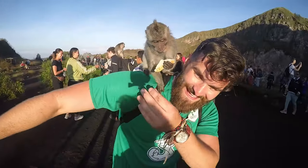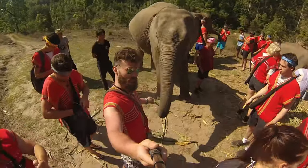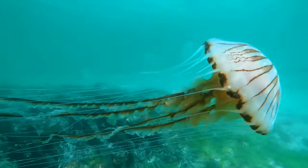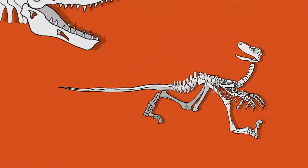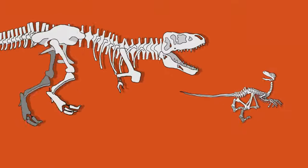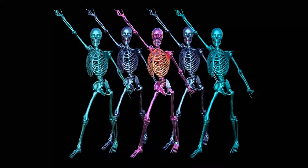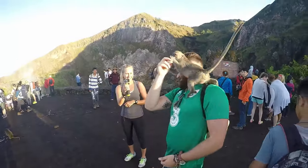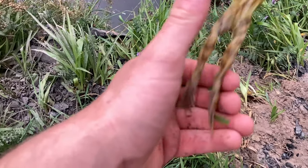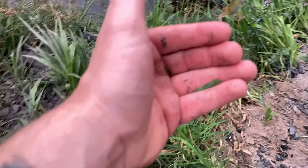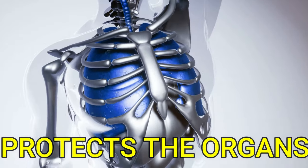There are all sorts of incredible creatures on planet Earth in a variety of different shapes and sizes. Along with this wide variety of animals comes different types of skeletal systems as well. A skeletal system allows animals to move, which is necessary for finding food, finding a mate, or escaping predators. It also supports the animal's body and helps to protect its organs.